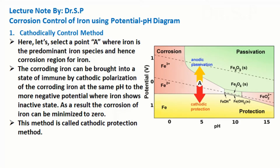Corrosion control of iron using a potential-pH diagram. We can control corrosion by the cathodically controlled method and the anodically controlled method. Let's start with the cathodically controlled method. Here, let's select a point A where iron is the predominant iron species.